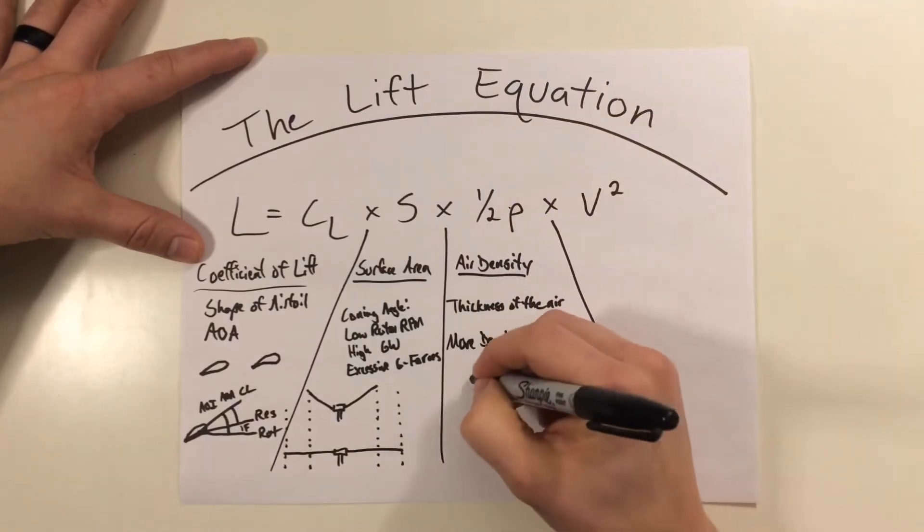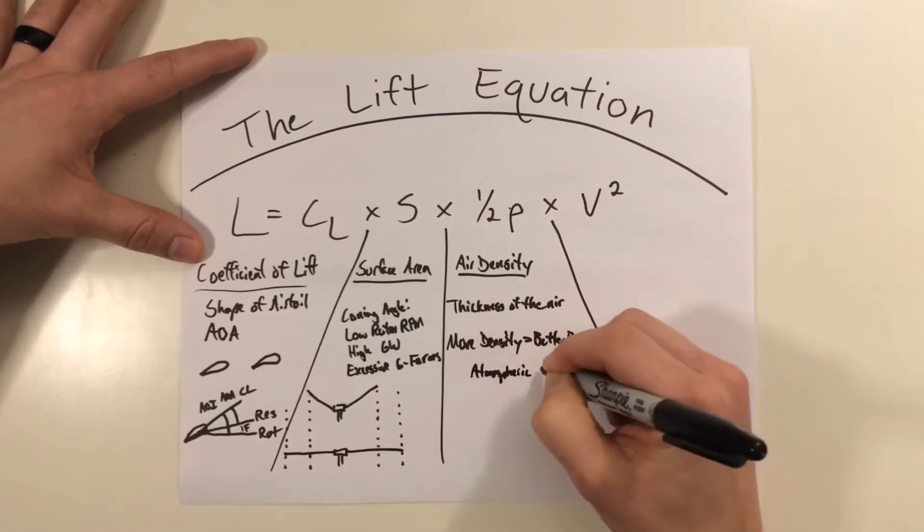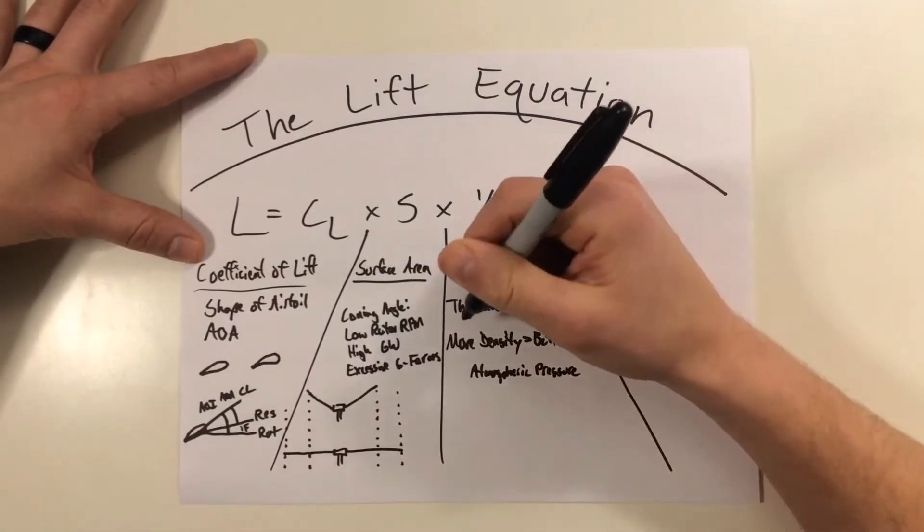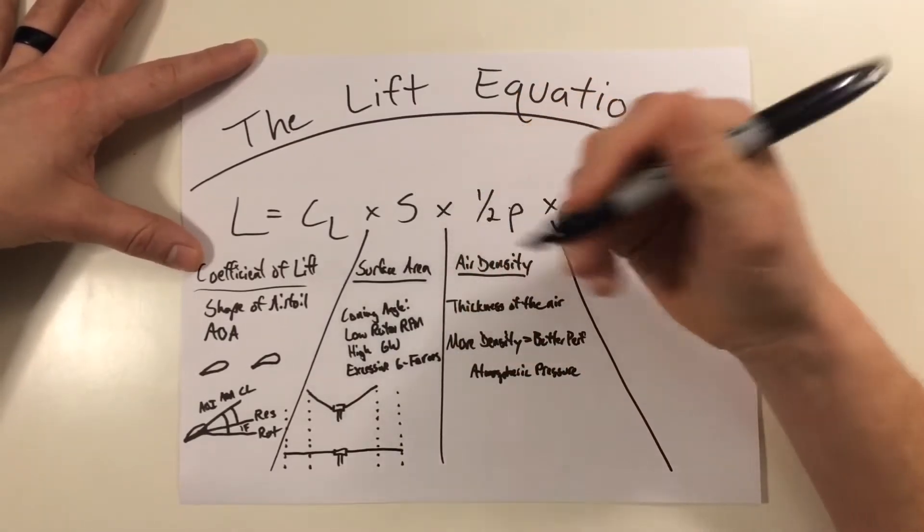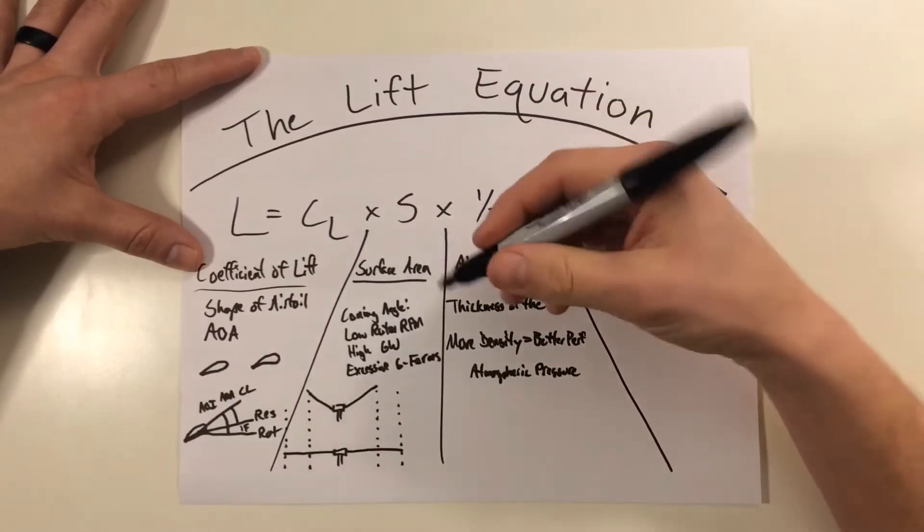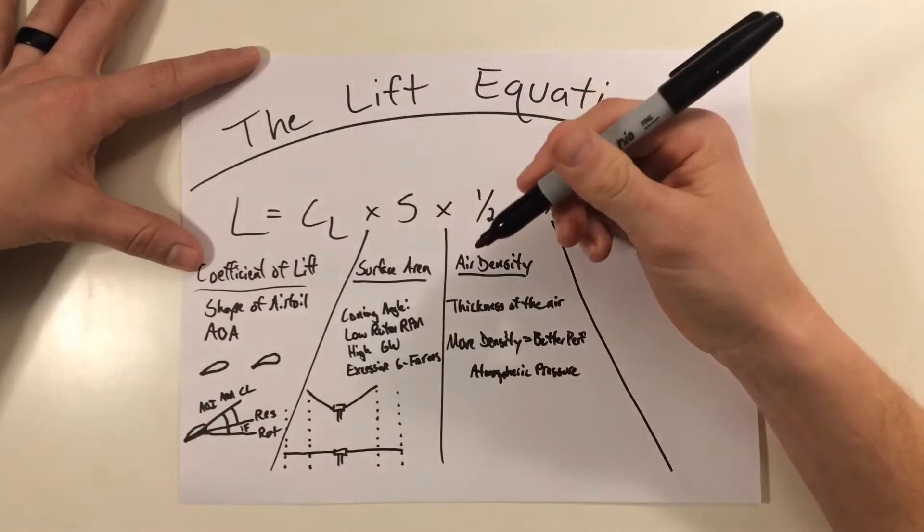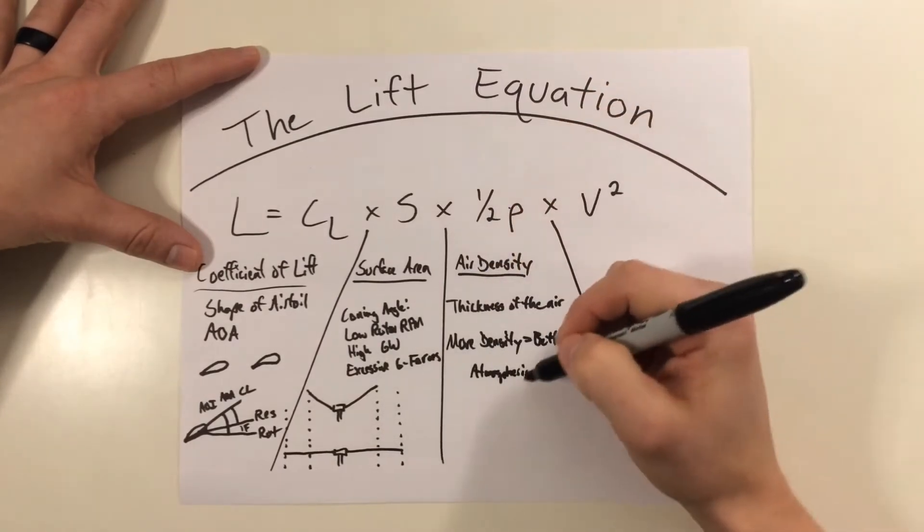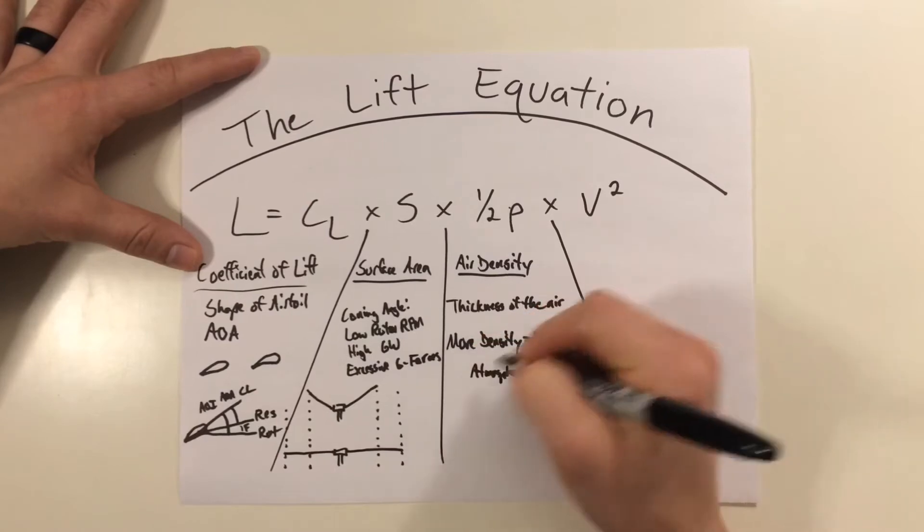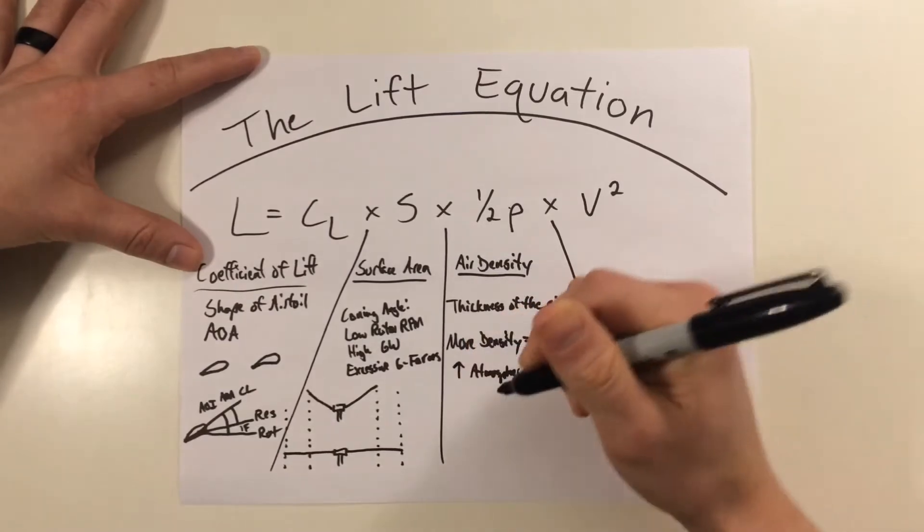So the first one we'll talk about today is atmospheric pressure. Obviously we can't control this, but as the pressure increases due to different weather fronts that come in, this varies day by day, region by region. But increases in pressure are going to make air more dense and increase performance. So for better performance, we want higher atmospheric pressure.